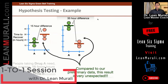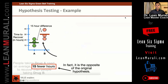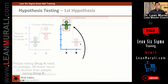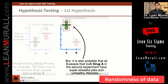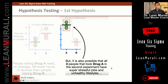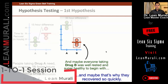There can be various reasons for that. Do we normally expect this with drugs like this? No, we don't. In fact, it is the opposite of the original hypothesis, which was 15 hours. It is also possible that all three people who took drug A in the second experiment have super stressful jobs and unhealthy lifestyles, while the people who took drug B were well rested and super healthy to begin with. You must be very careful about the randomness of data.